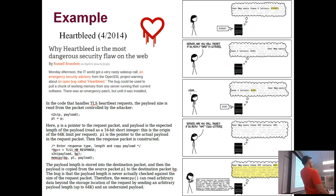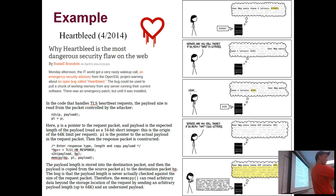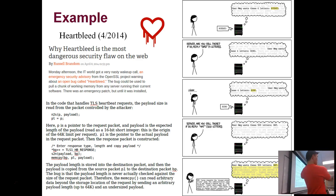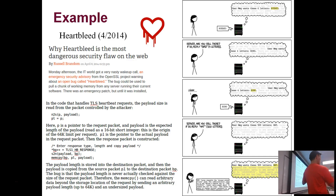If you ask for 50,000 letters, it gives you 50,000 bytes beyond where the word was stored in memory — and with enough requests you could get the secret keys of the web server. The web server protected by TLS has certificates that are supposed to be secret, but they're up there in memory. This memory overrun gives you all the secrets of the web server and allows you to break it.